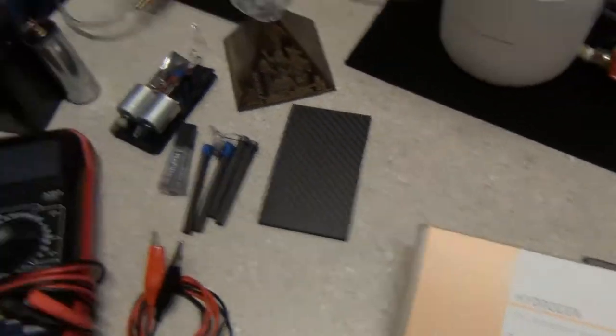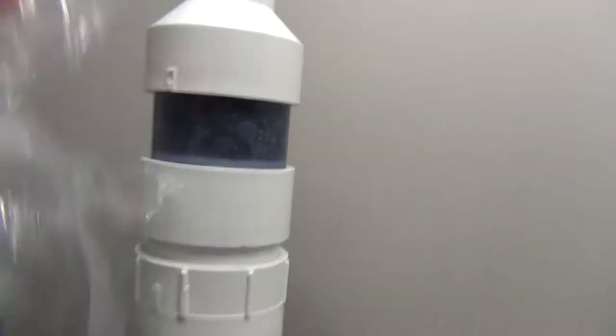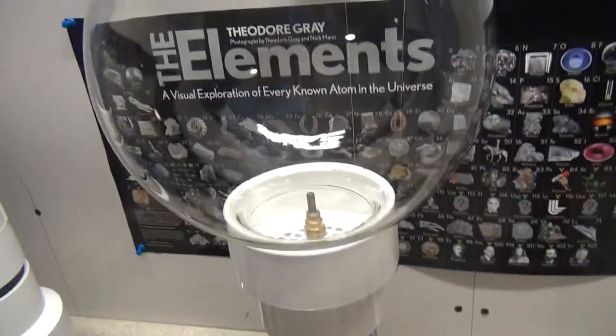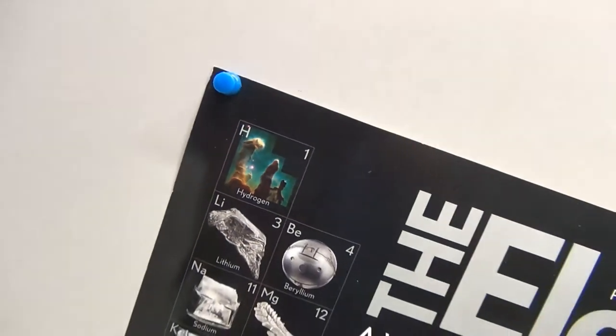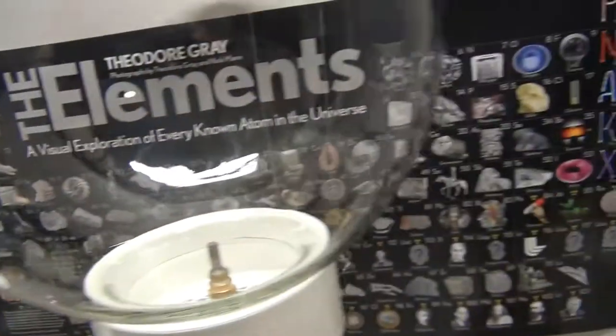Alright, welcome back ladies and gentlemen. It's been a while since I've made any videos, everything's collecting dust in here. Today we're going to be talking about the hydrogen atom. It's on the table of elements, number one. You can't miss it, it's the first element on the table of elements.